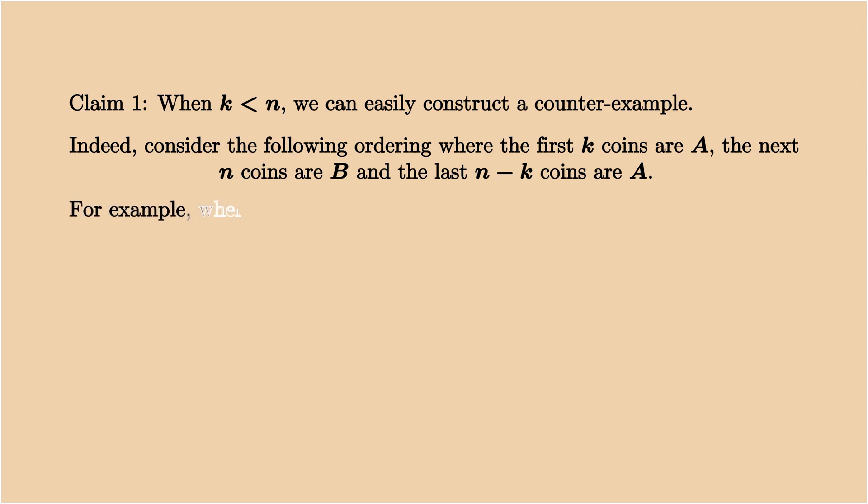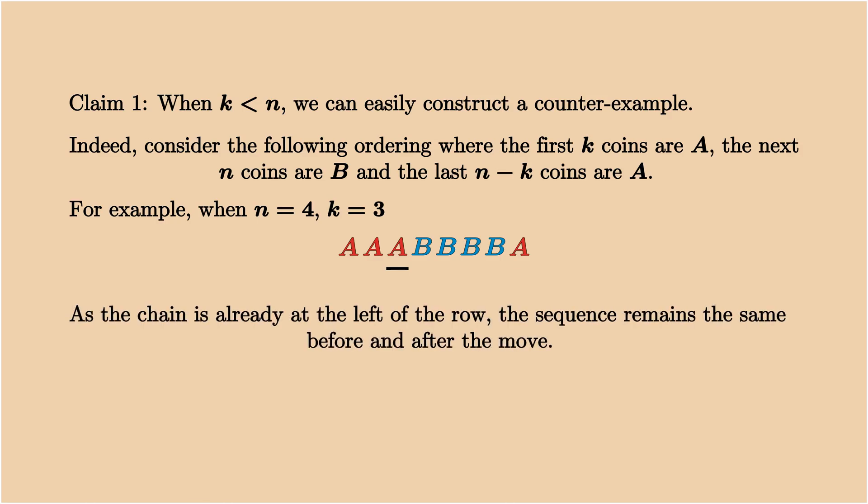To make it concrete, here is an example for n equals 4 and k equals 3. As the chain already sits at the left-hand side of the row, the sequence remains the same before and after the move, so we're stuck at the same ordering forever. This means k must be larger or equal to n.